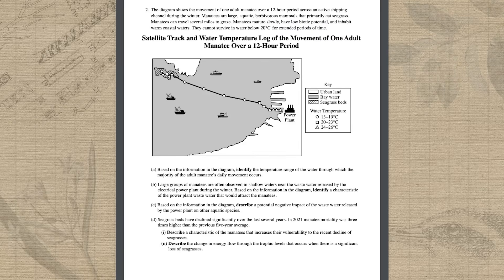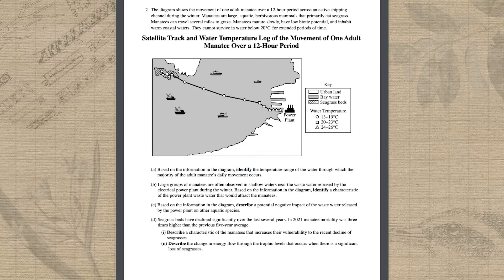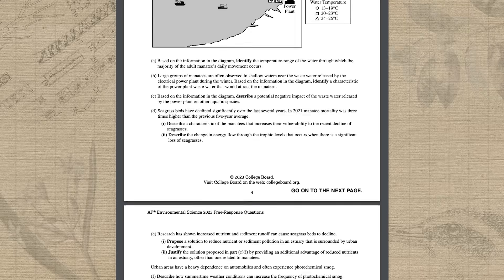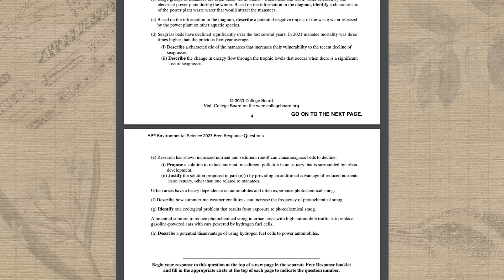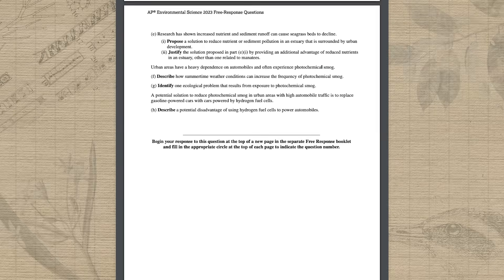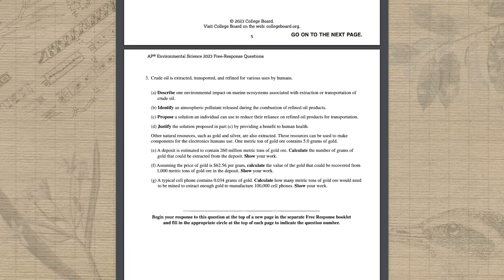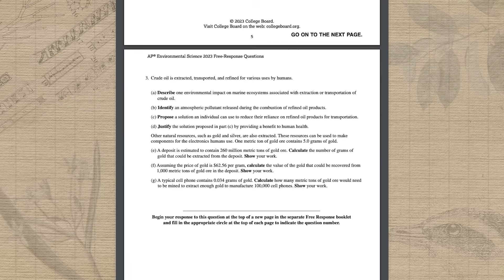There will be a couple of easy identify points related to that stimulus, and then a few questions related to a possible solution to the environmental problem. You should also be prepared to give an unintended consequence or an additional benefit of the solution you proposed. Question 3 will focus on a set of calculations, most likely 3 related math problems, each worth 2 points.